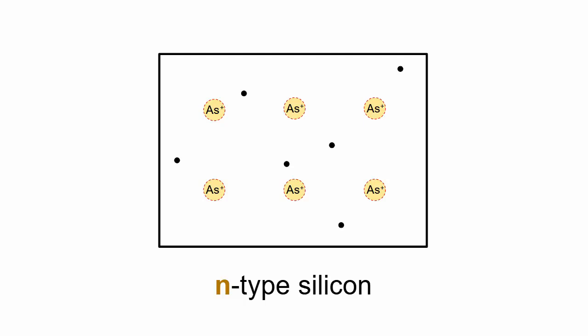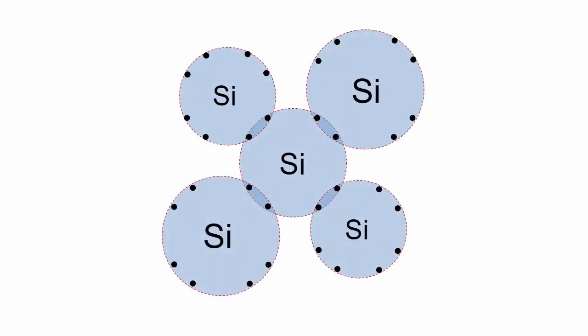The positively charged arsenic atoms cannot move or carry a current. Now let's look at what happens when a boron atom replaces a silicon atom.